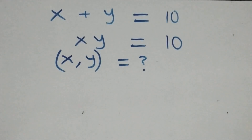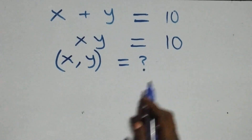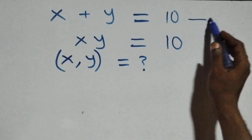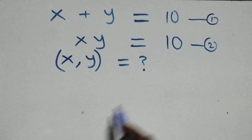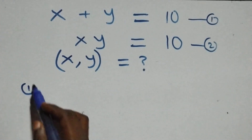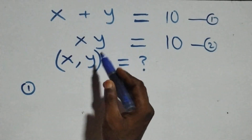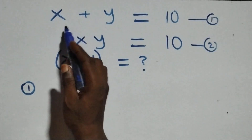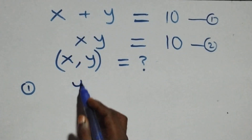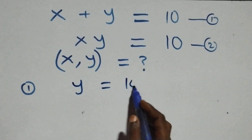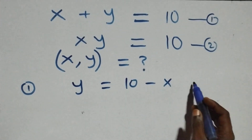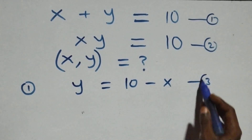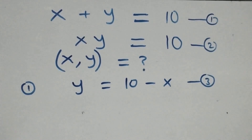Hello, you're welcome. How to solve this nice algebra problem. Let's label the first equation as equation one and the second as equation two. From equation one, we can make y the subject by taking x to the other side, so this becomes y equals to ten minus x — we'll call this equation three.